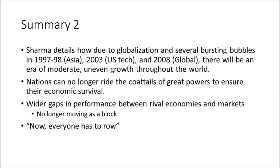Sharma details how, due to globalization and several bursting bubbles — in 1997-98 in Asia, in 2003 the U.S. tech market, and in 2008 the global market — there will be an era of moderate, uneven growth throughout the world. The idea that nations will be hinged together is no longer the case. Nations can no longer ride the coattails of great powers to ensure their economic survival. There will be wider gaps in performance between rival economies and markets. As Sharma says in his final chapter, now everyone has to row.